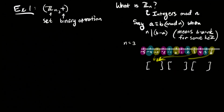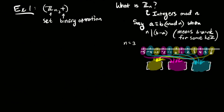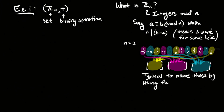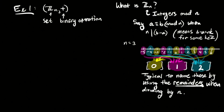A mathier name for basket is an equivalence class. So once we've put all the integers into their respective baskets, we've got to figure out what to name them. It's typical to name them whatever the remainder is when you divide by 3, so we'll name them 0, 1, and 2. These three elements form the set Z3.